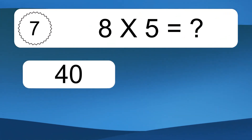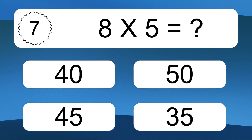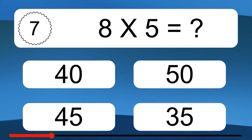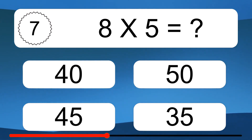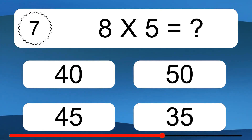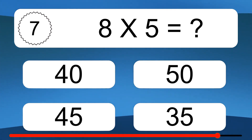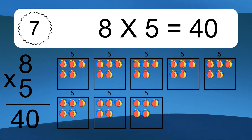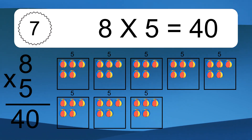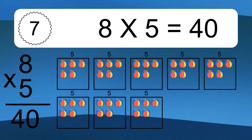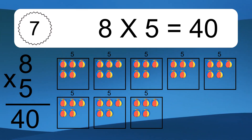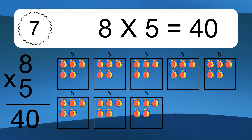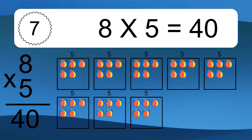8 times 5. We have 8 boxes and each box has 5 colorful balls inside. If you count all the balls in all the boxes together, you will have 8 times 5 balls. This equals 40 balls.